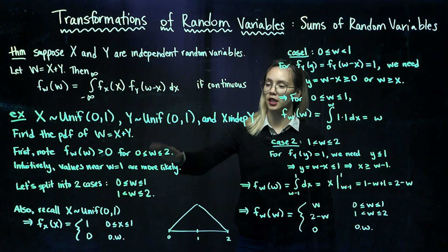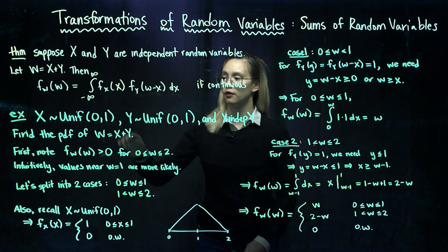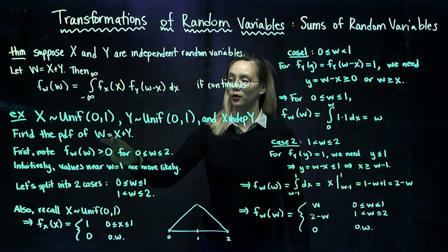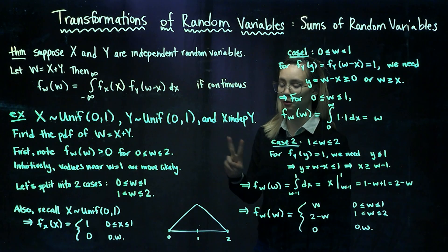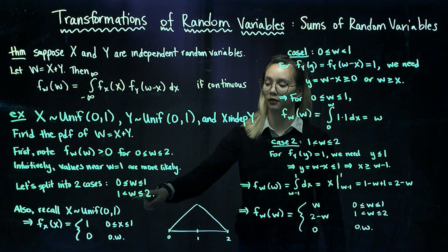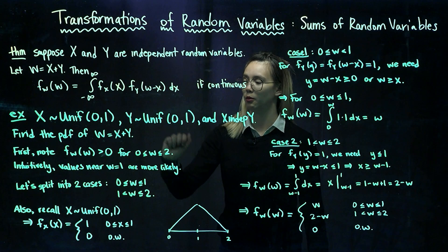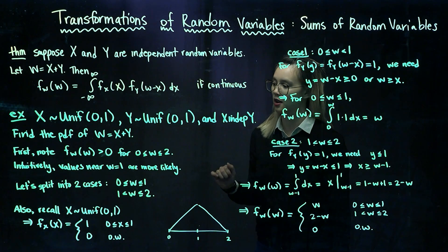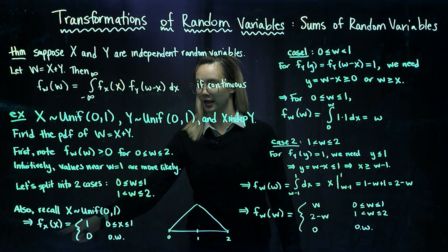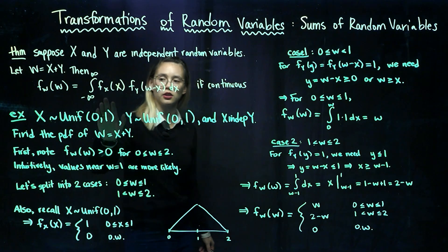The thing that will be a little tricky is the bounds of our integration. Because the PDF for x is positive between 0 and 1, the PDF for y is positive between 0 and 1, and the PDF for w is positive between 0 and 2, we're going to split this into two cases: values of w between 0 and 1, and then values of w between 1 and 2. As a reminder, since x and y are both uniformly distributed on the interval 0 to 1, the PDF equals 1 for values between 0 and 1 and 0 otherwise — and the same goes for y.